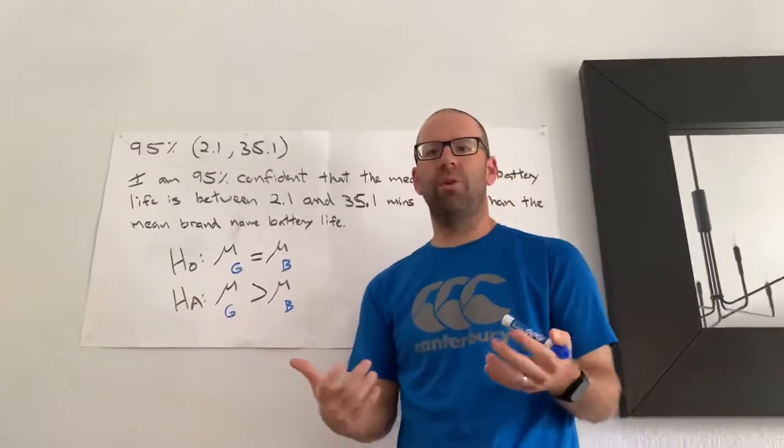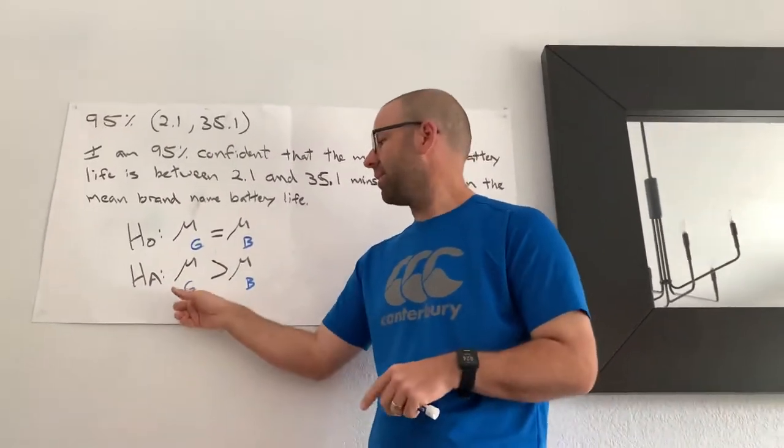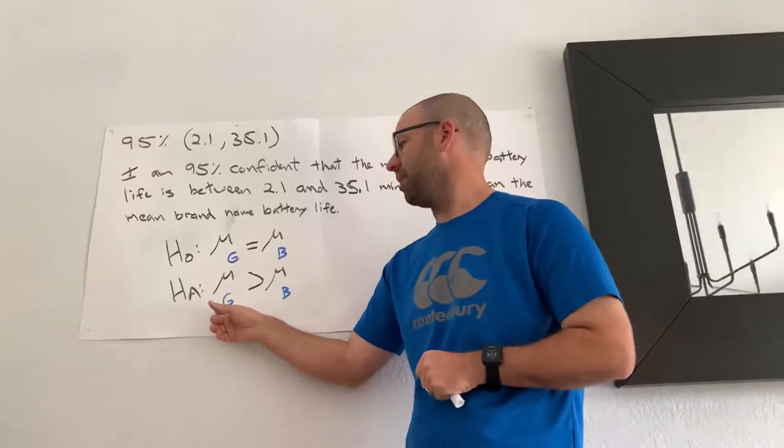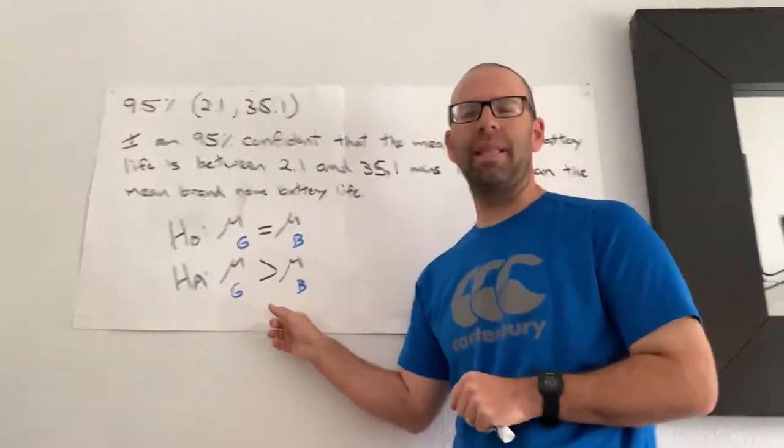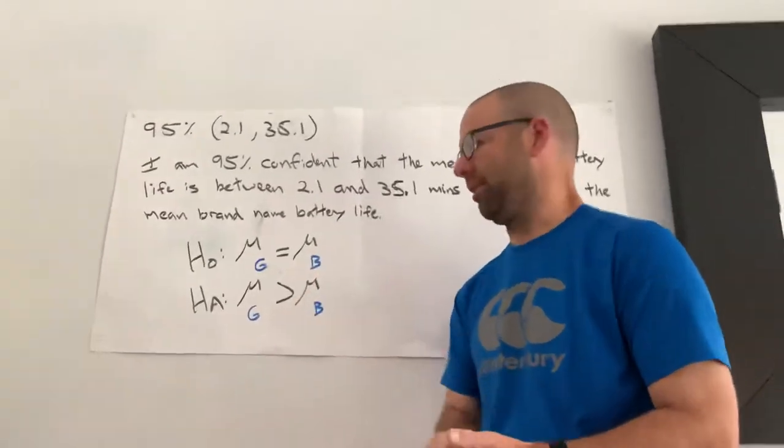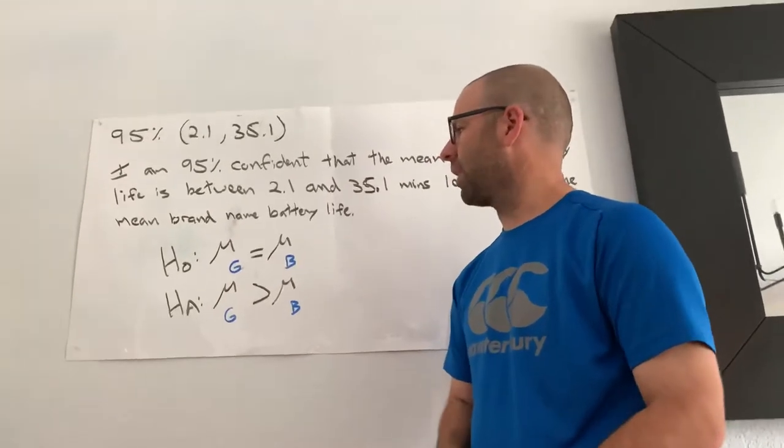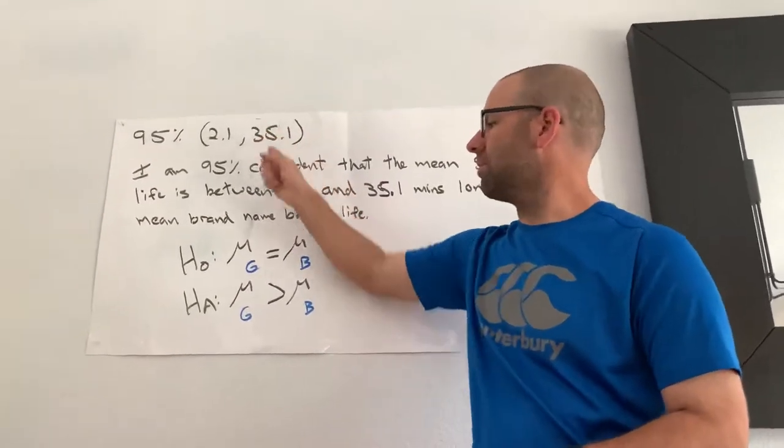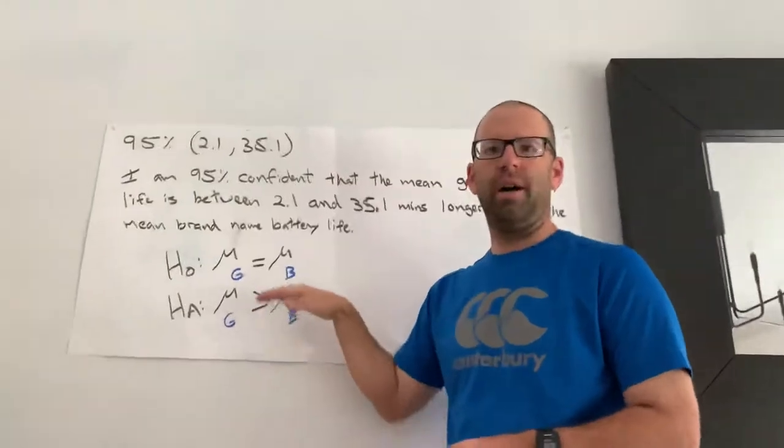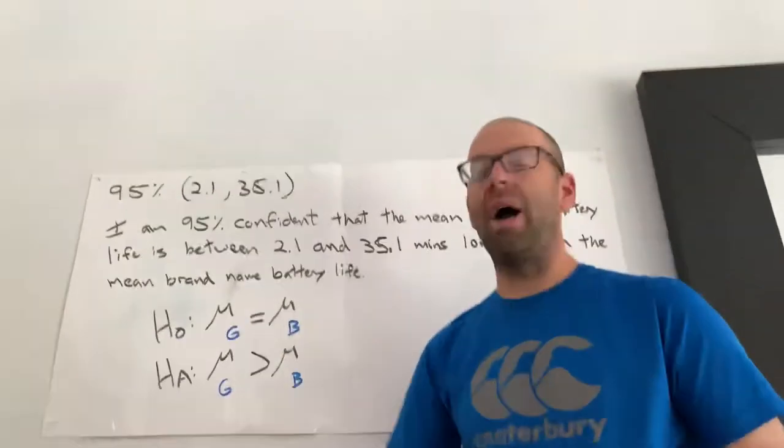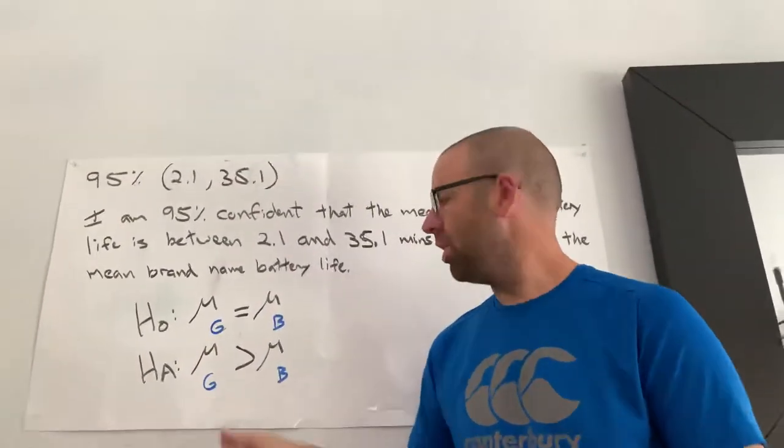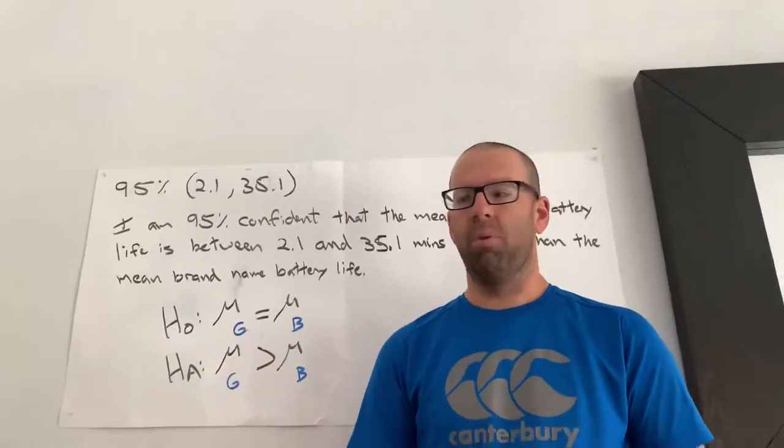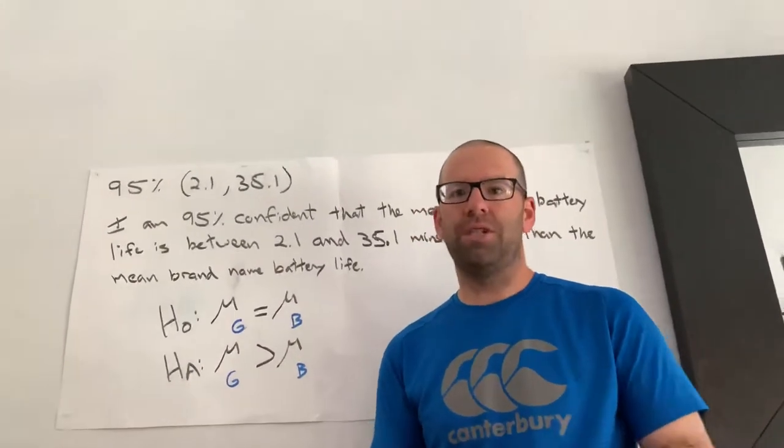So I assume that they're equal to each other. However, in this situation, I'm pretty confident that the mean life of generic batteries is greater than the mean life of brand name batteries. And so what we're going to do is we're going to use this confidence interval to prove this test here. Do I have sufficient evidence to show that this alternate is true? Well, I do. I do have sufficient evidence.